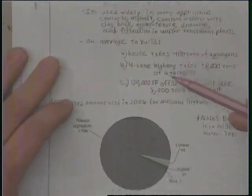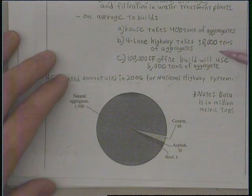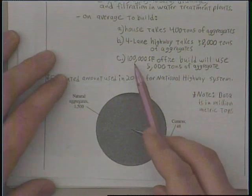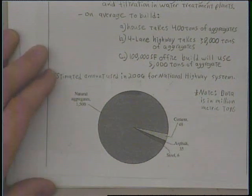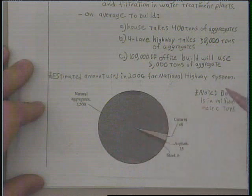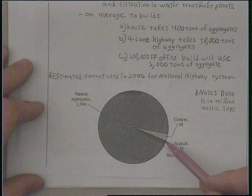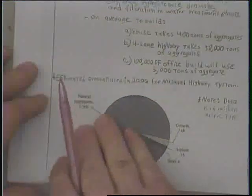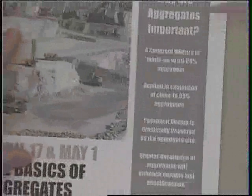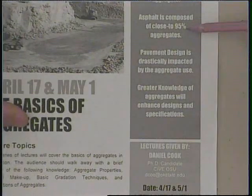If you look at a pie chart of materials used in millions of metric tons, cement, steel, and asphalt make up portions, but everything else is aggregates — that's a large component. Concrete is made up of about 60% to 80% aggregate by overall mixture, and asphalt is composed of almost 95% aggregate. It's important to understand what you're looking at.